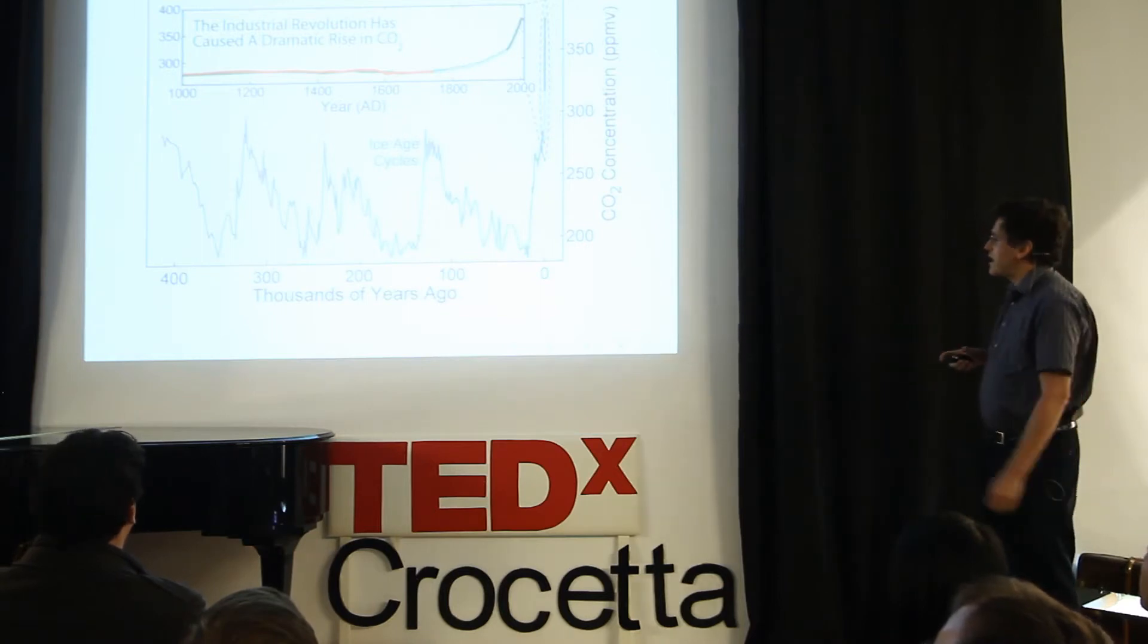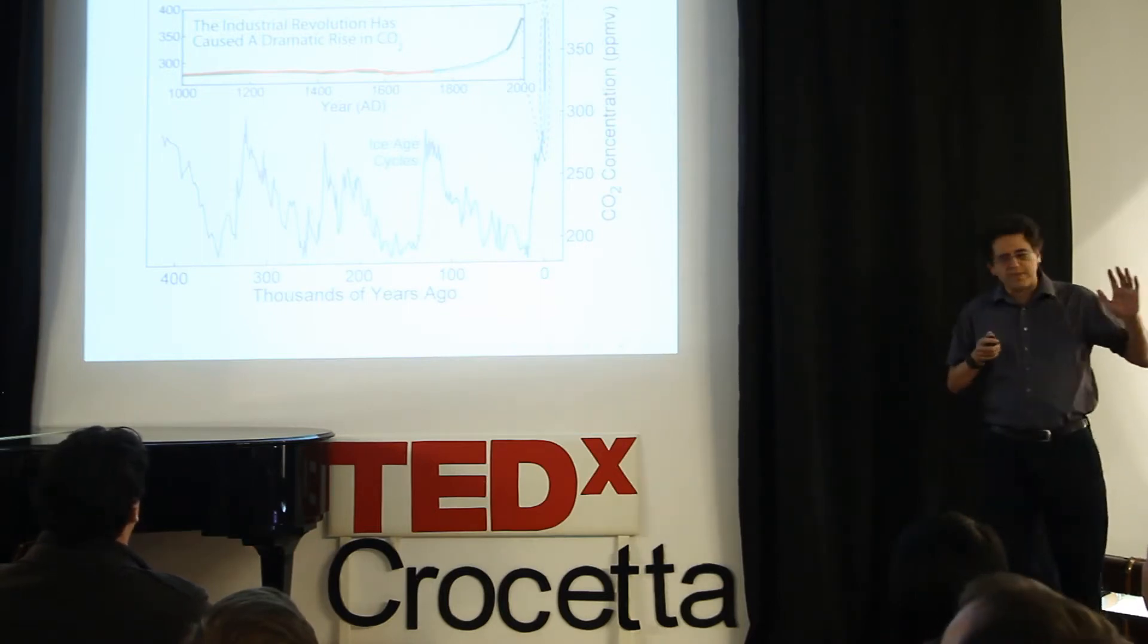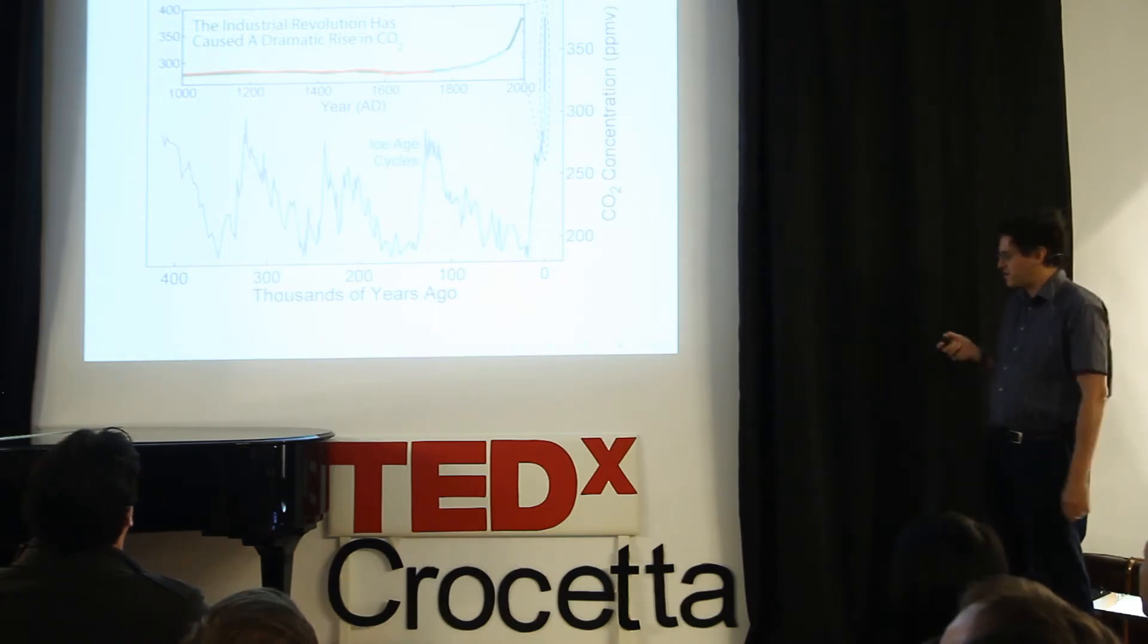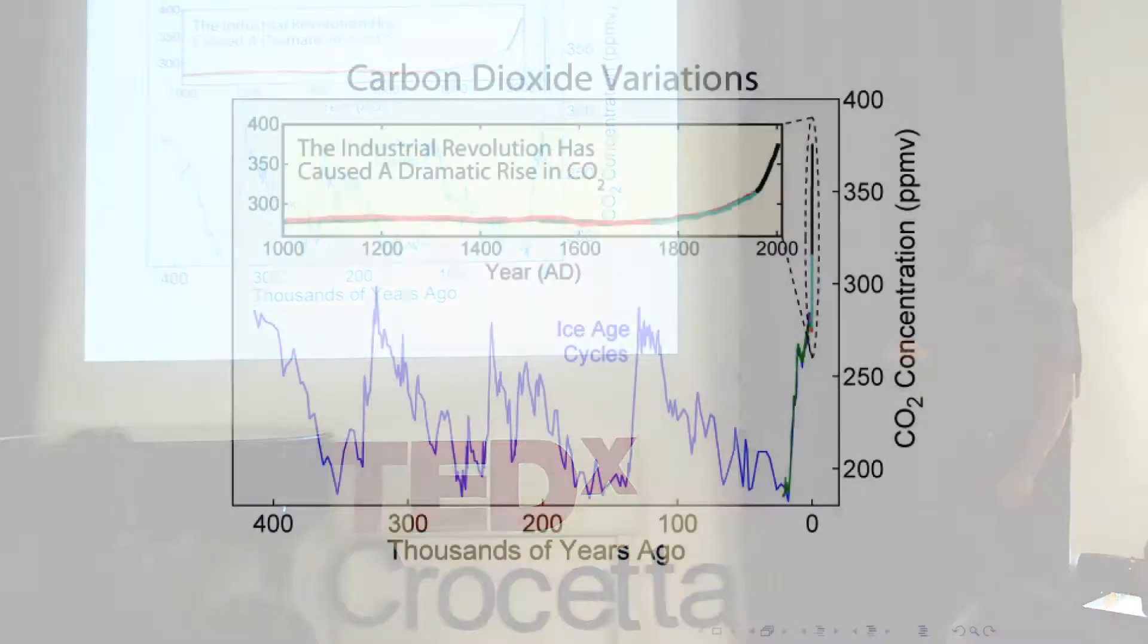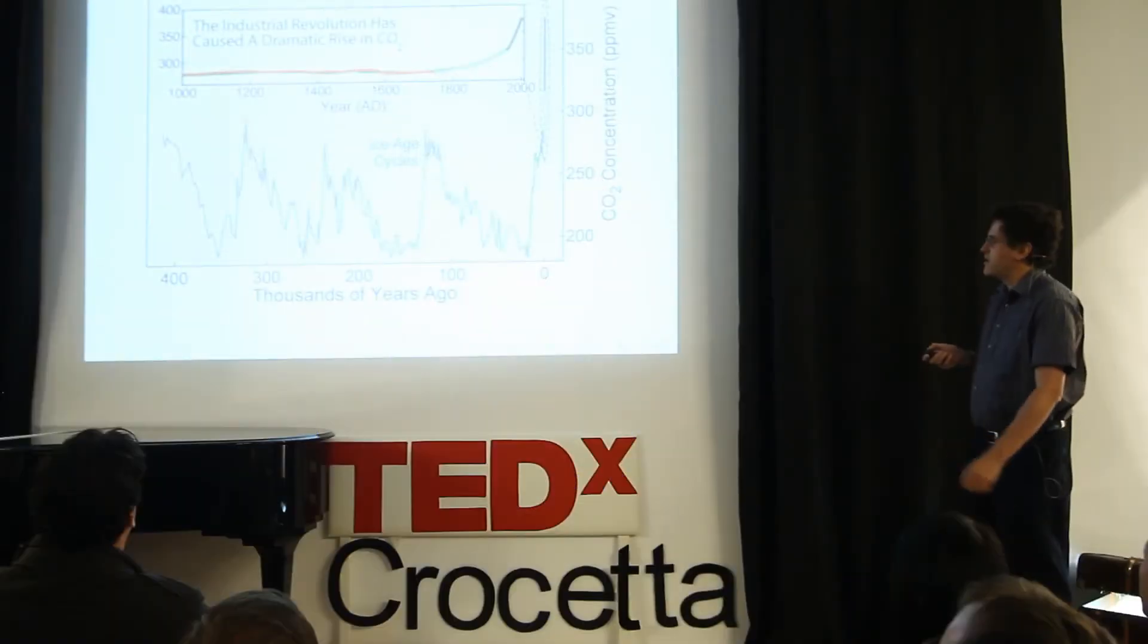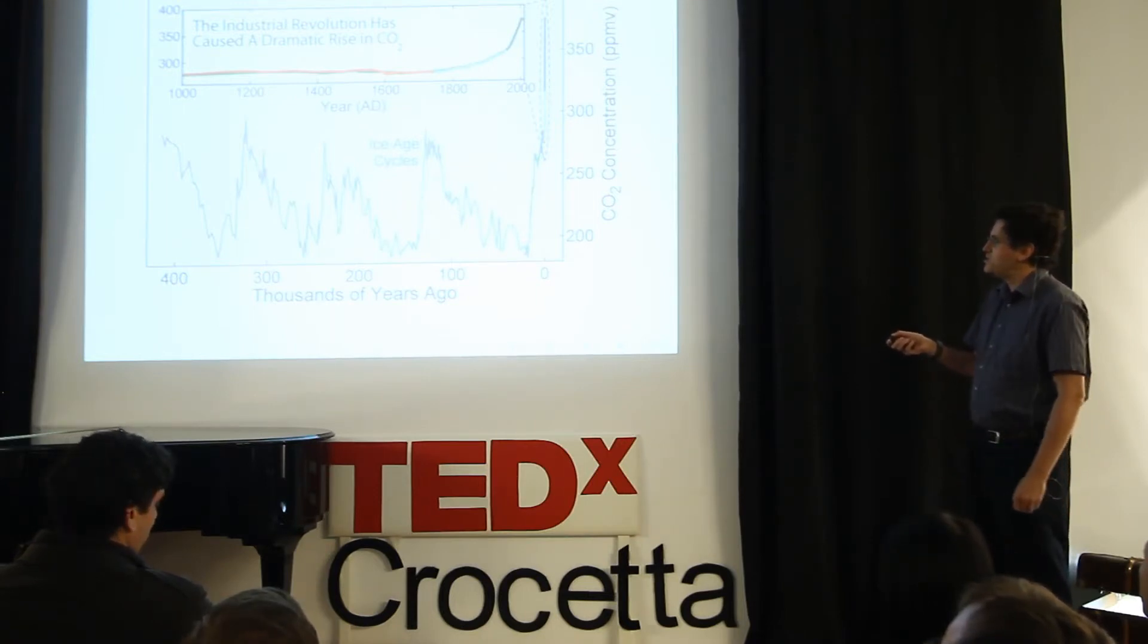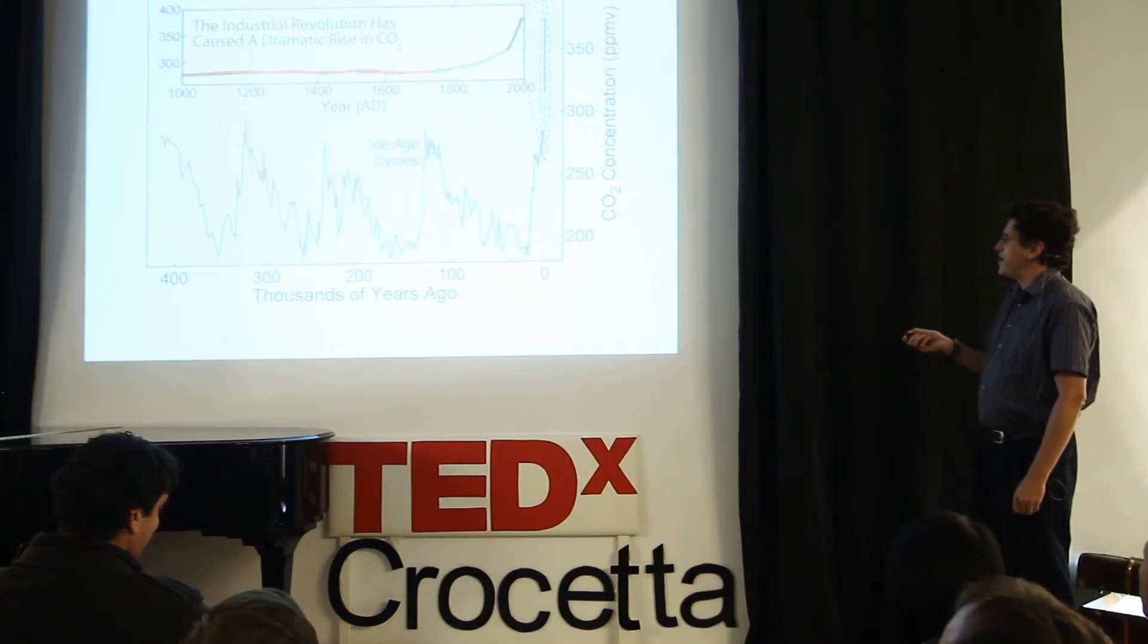To really see how dramatic this is, I think it's good to look back further in time. People like to talk about natural climate cycles, and they're indeed important. These are the ice age cycles. When there's a lot of carbon dioxide in the air, it's hot. This is a graph of the amount of carbon dioxide, but it goes along with temperature. So in between ice age cycles, there's a lot of CO2. During the ice ages, there's a lot less. It goes up and down.